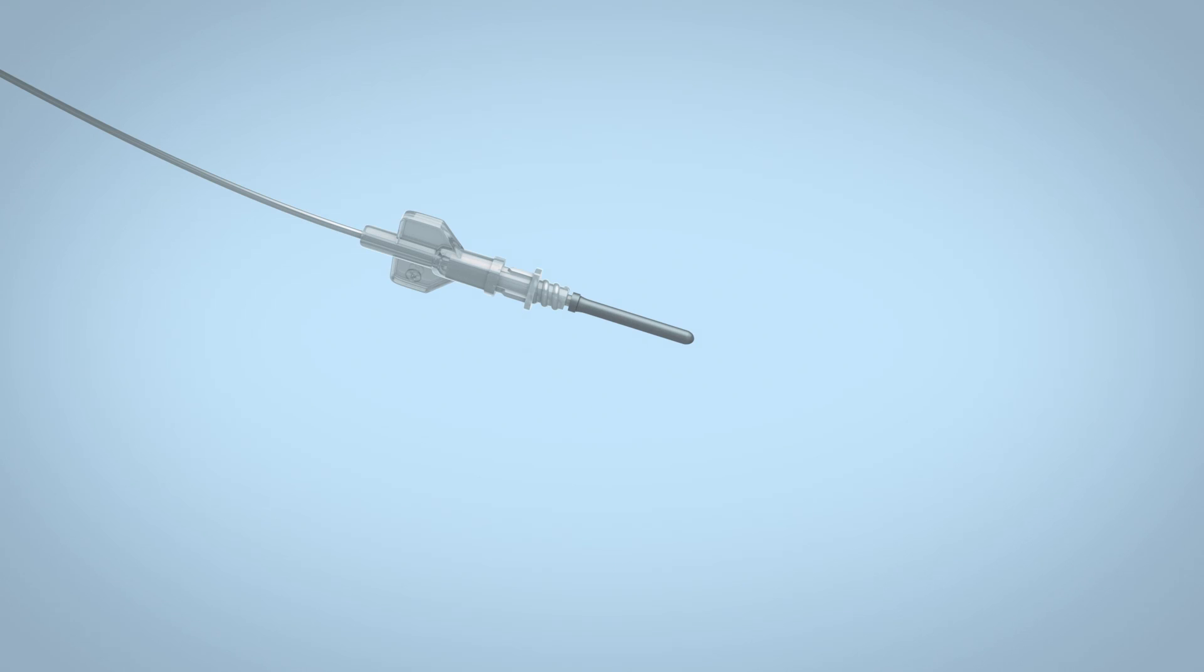For blood collection using a tube holder, thread the lure adapter into a tube holder, making sure the winged hub remains tightly connected to the adapter.